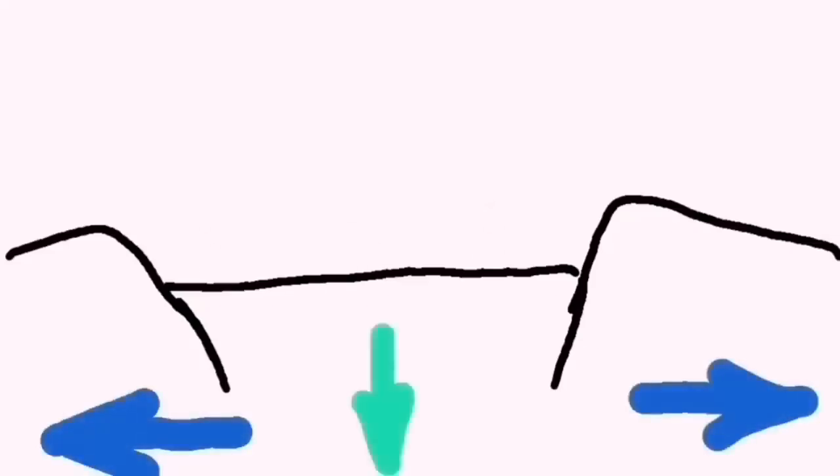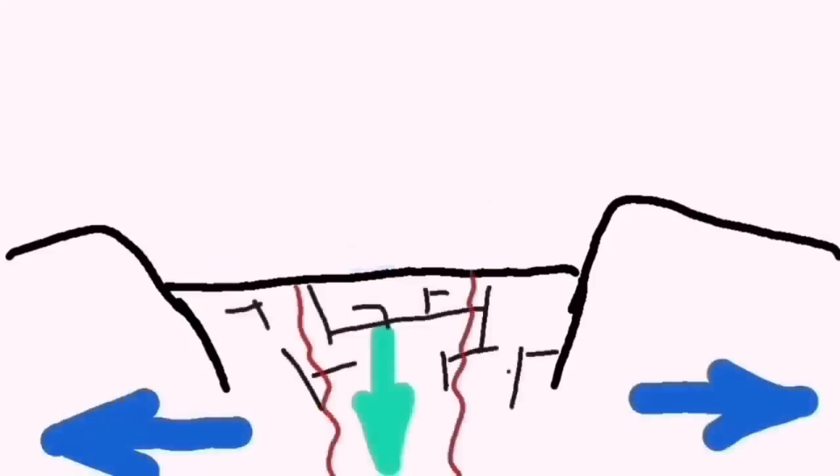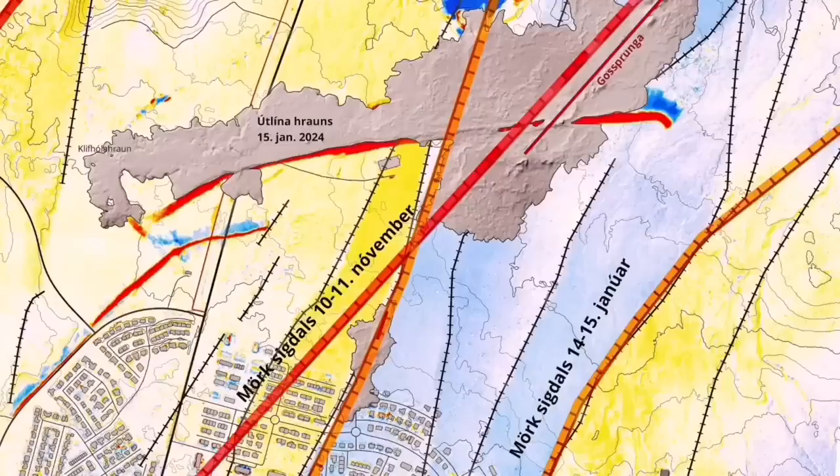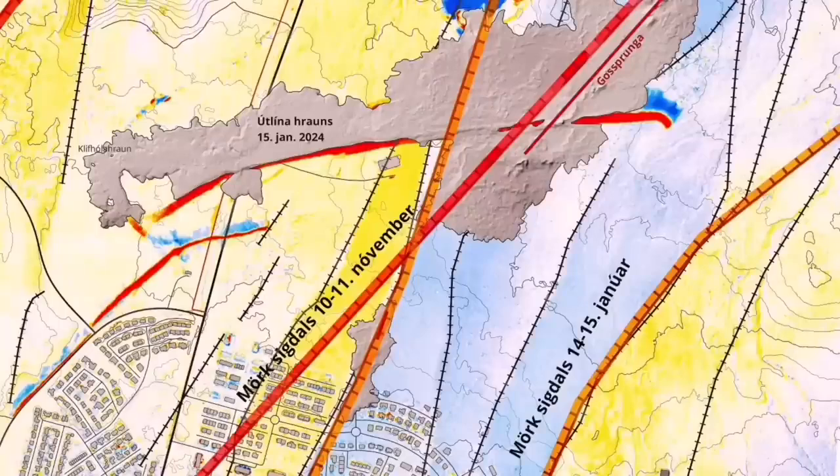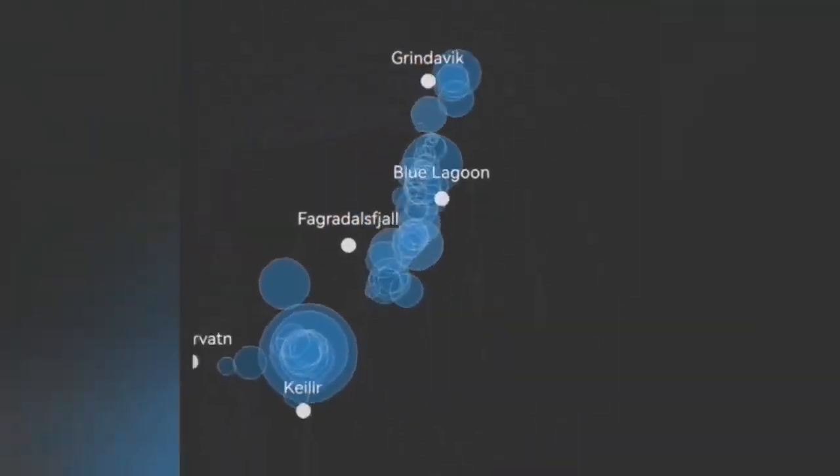This diagram shows that movement ripping apart the land causes the downfall of a block of rock, which creates cracks. Through the cracks, magma can rise and melt and create lava. Now this is a different situation.